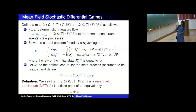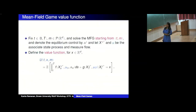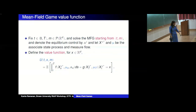This defines the mean field equilibrium: a measure flow mu is a mean field equilibrium if it is a fixed point of this map — solve the control problem given mu, run the dynamics, and the resulting law must equal mu. You then define the mean field value function U(t, x, M): starting from time t and state x, with the MFG measure starting from M. The value function V_i^N of each N-player game should approximate U.